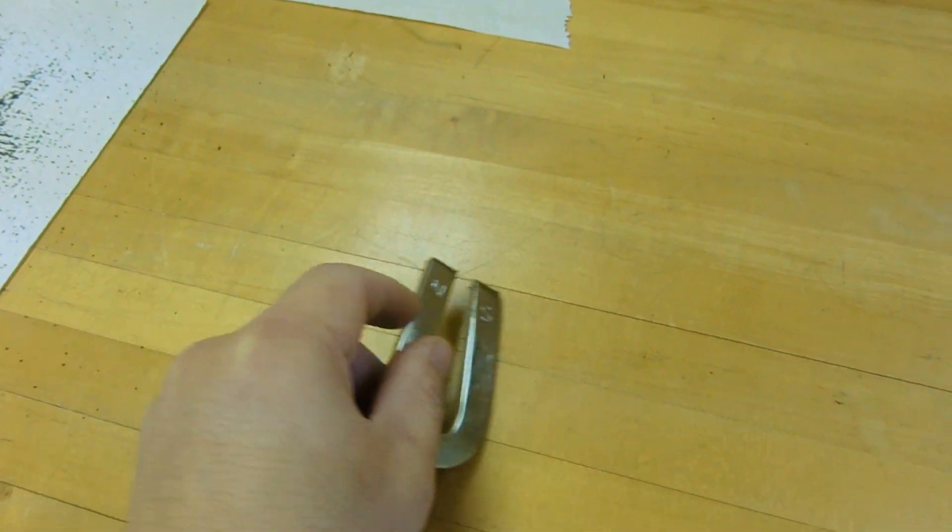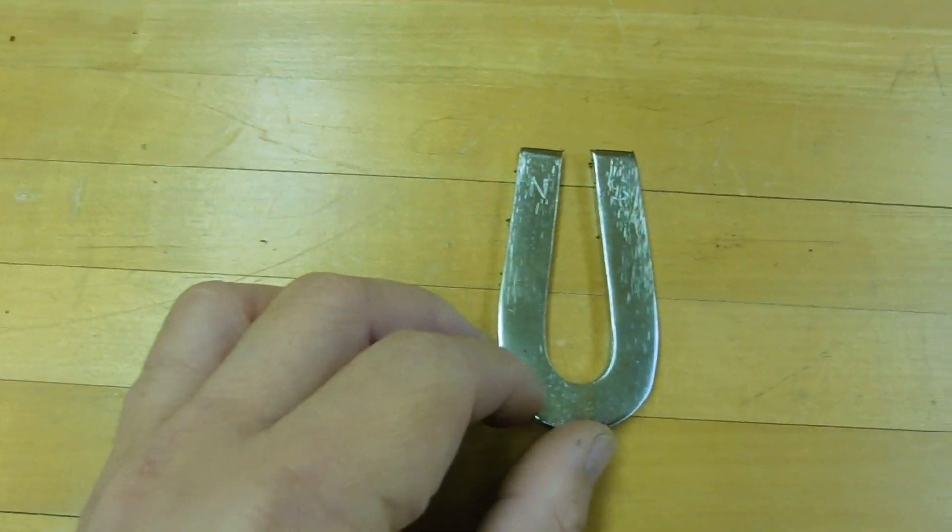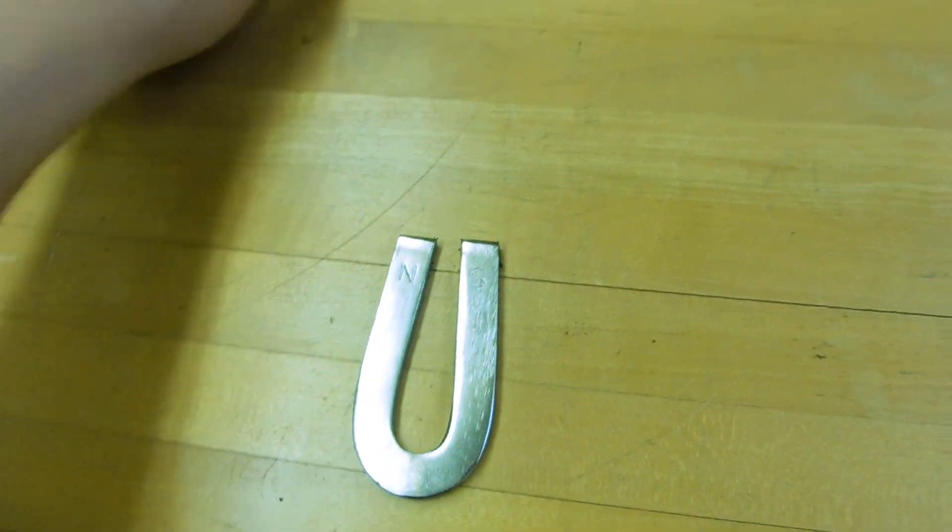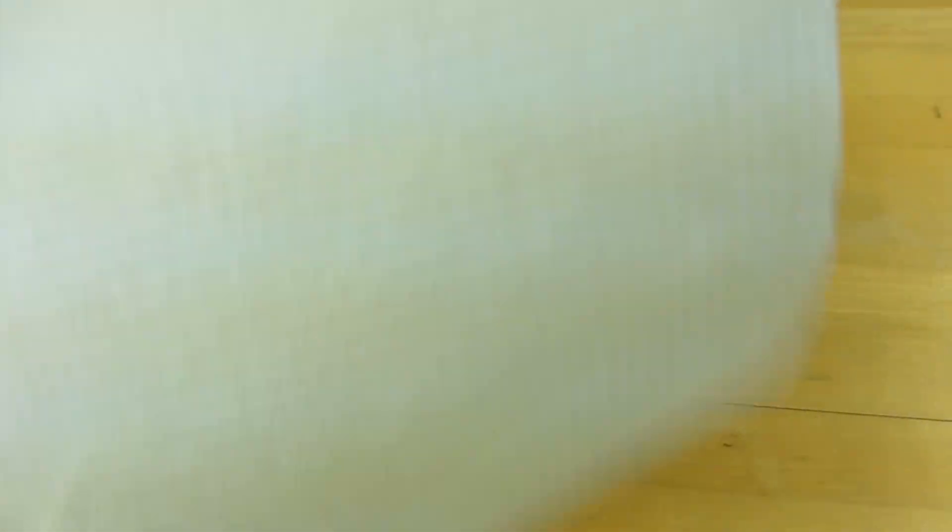Now let's move on to the horseshoe magnet. This is a horseshoe magnet with the north and the south pole as you can see. And I cover it with a sheet of paper and I'm going to sprinkle iron filings on it and you will see how the iron filings align themselves.